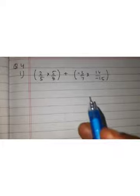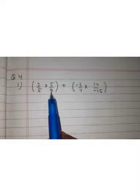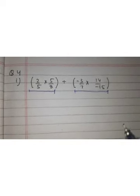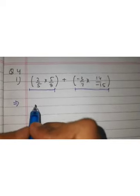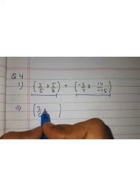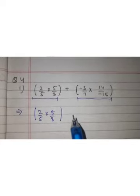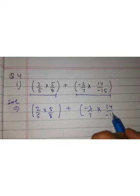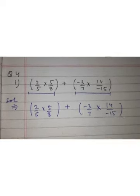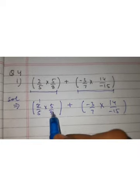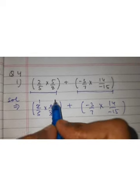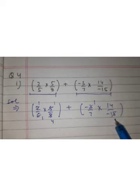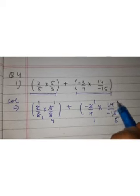Question number 3 is similar — try it on your own. Now let us discuss question number 4, first part: (2/5) × (5/8) + (−3/7) × (14/−15). We solve the multiplications first, then add. For 2/5 × 5/8: 2 and 8 cancel (2÷2=1, 8÷2=4), and 5 and 5 cancel (5÷5=1, 5÷5=1). For −3/7 × 14/−15: 3 and 15 cancel (3÷3=1, 15÷3=5), and 7 and 14 cancel (7÷7=1, 14÷7=2).